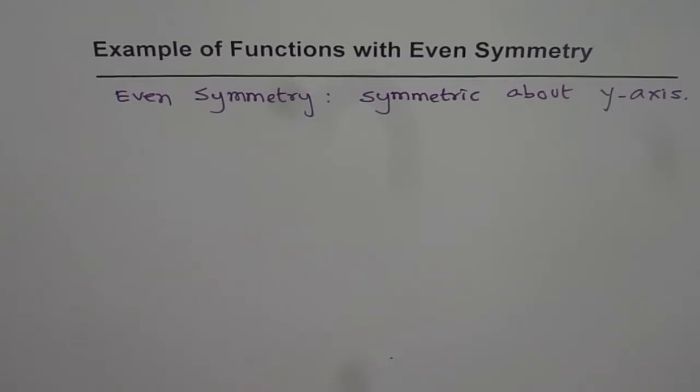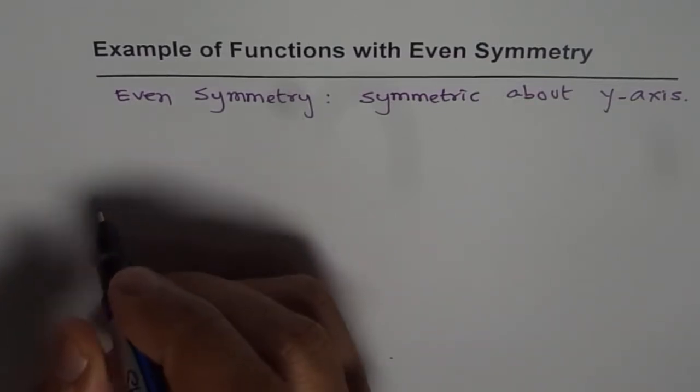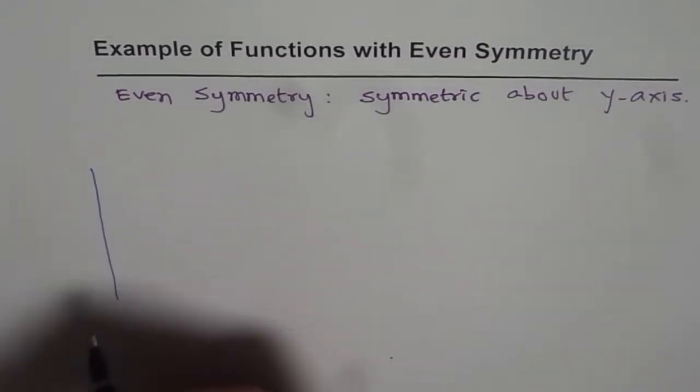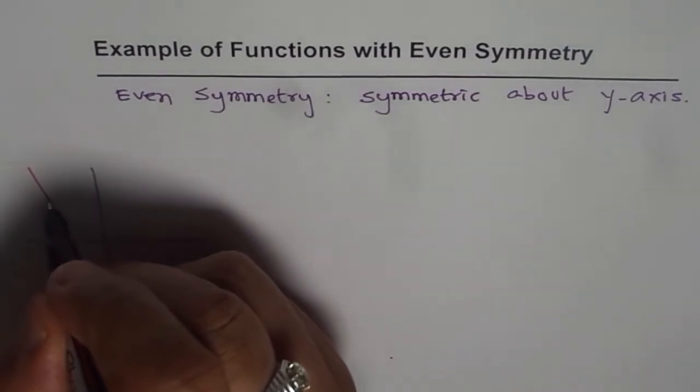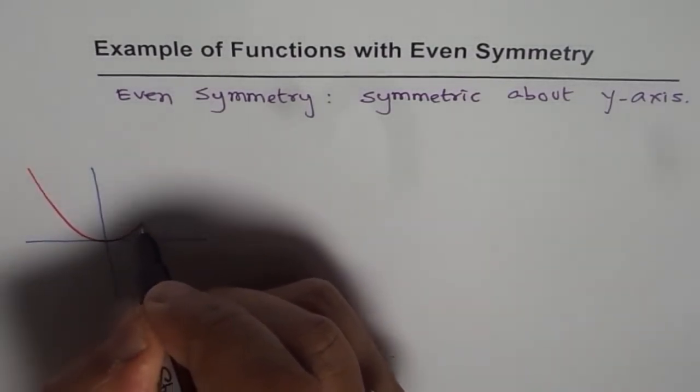So from a graph, if you look at the graph, if it is symmetric about the y-axis, that means the function has even symmetry. So to give you a few, based on that, we have a graph here. Let me draw one by one some of the functions which have even symmetry, and they are mainly symmetric about the y-axis.